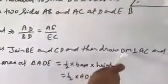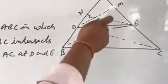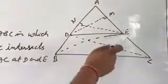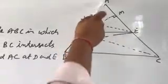Then draw DM perpendicular to AC and EN perpendicular to AB.